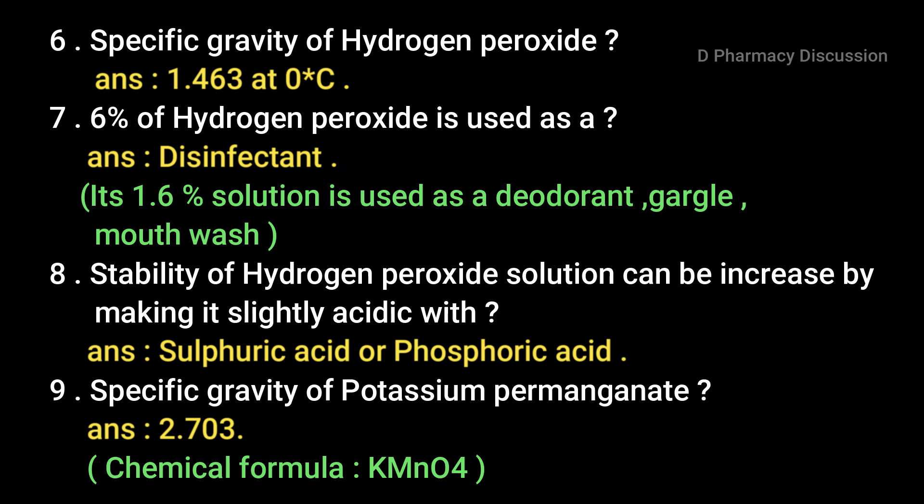Next question: specific gravity of hydrogen peroxide — answer 1.463 at 0°C. 7.6% hydrogen peroxide is used as a disinfectant, and its 1.6% solution is used as a deodorant gargle and mouthwash. Eighth question: stability of hydrogen peroxide solution can be increased by making it slightly acidic — answer sulfuric acid or phosphoric acid.